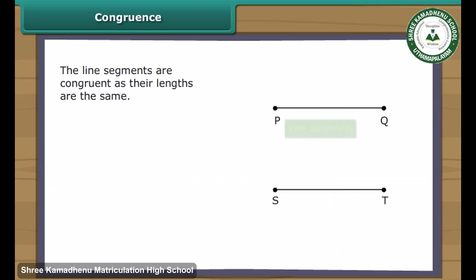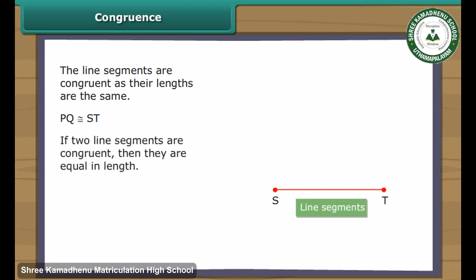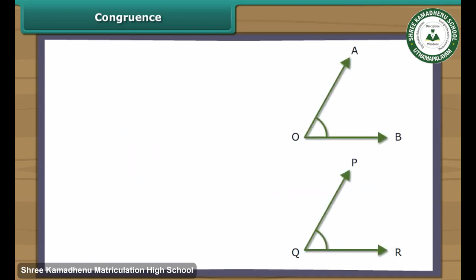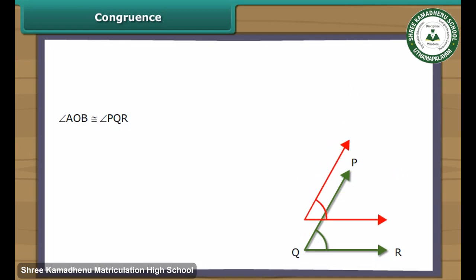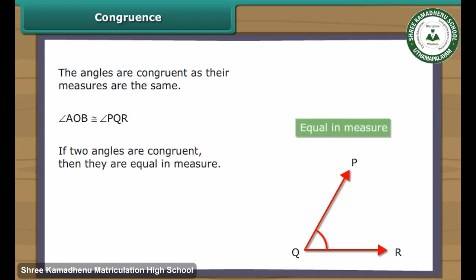Here are two line segments, PQ and ST. We will check if they are congruent. The line segments are congruent as their lengths are the same. It is also true that if two line segments are congruent, then they are equal in length. Here are two angles, angle AOB and angle PQR. Let us find out if they are congruent. The angles are congruent as their measures are the same. It is also true that if two angles are congruent, then they are equal in measure.